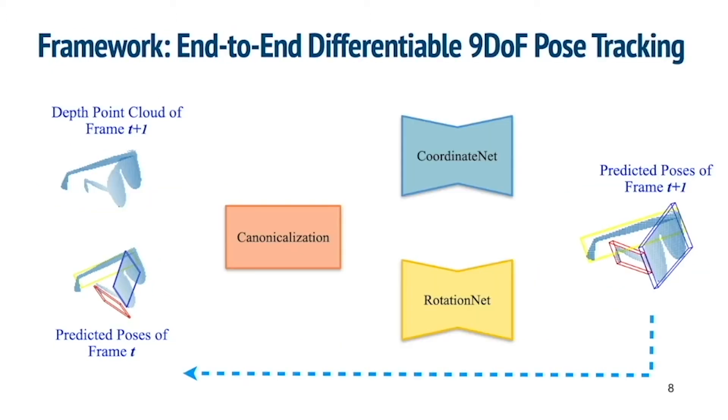Our devised pose canonicalization module first transforms and canonicalizes the input point clouds. Then the canonicalized point clouds will be pushed through coordinate net for normalized coordinate prediction, and rotation net for rotation regression. Combining the outputs of the two networks, we can end-to-end differentiably predict the 9 degree of freedom poses at frame T plus 1.